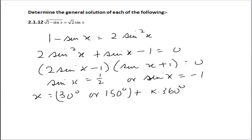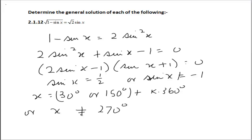For sinx = -1, we get x = 270°. However, since √2·sinx must be positive in the original equation, sinx should have been positive. So at this stage we reject sinx = -1 as an extraneous root — this is what happens with surd equations where squaring introduces extraneous solutions.